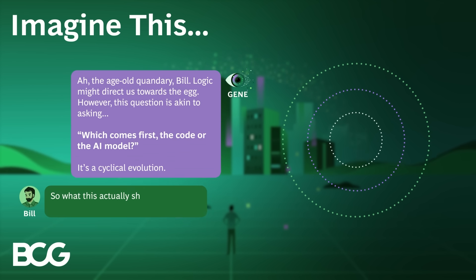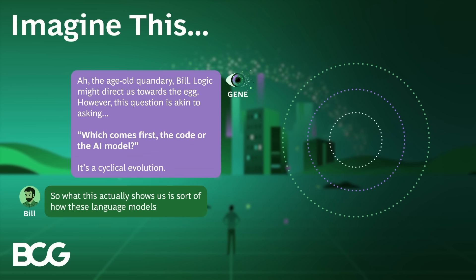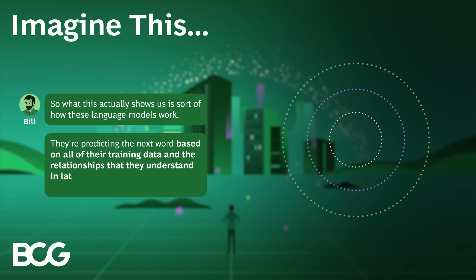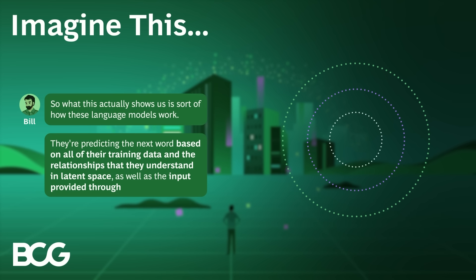So what this actually shows us is how these language models work. They're predicting the next word based on all of their training data and the relationships that they understand in latent space, as well as the input provided through the prompt.